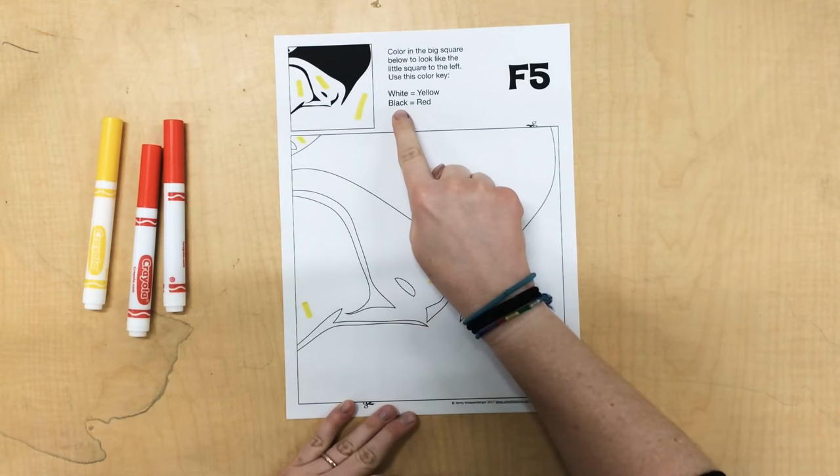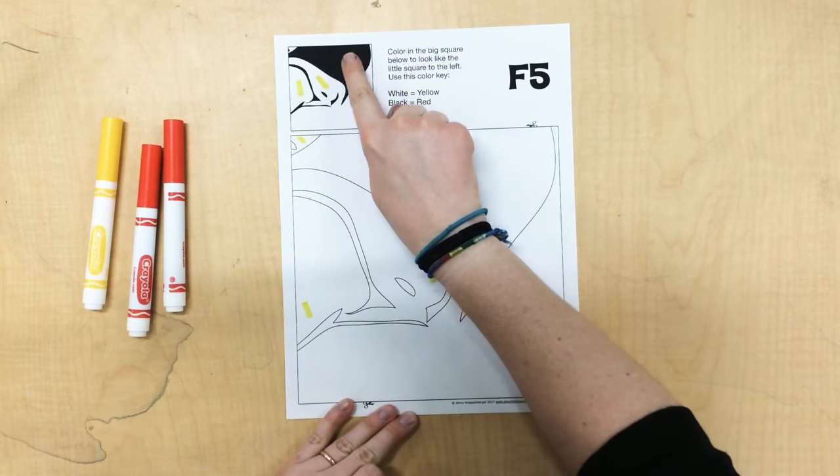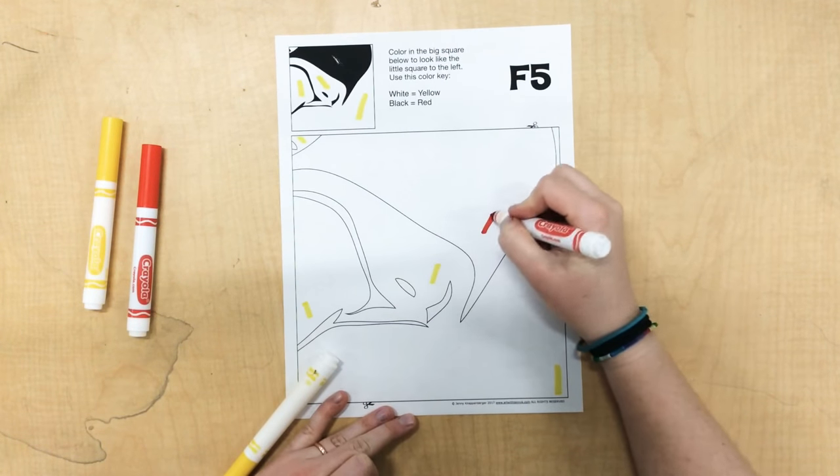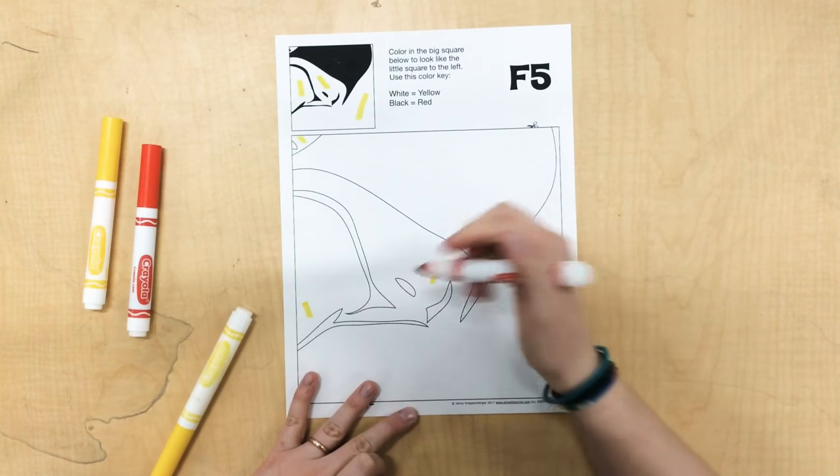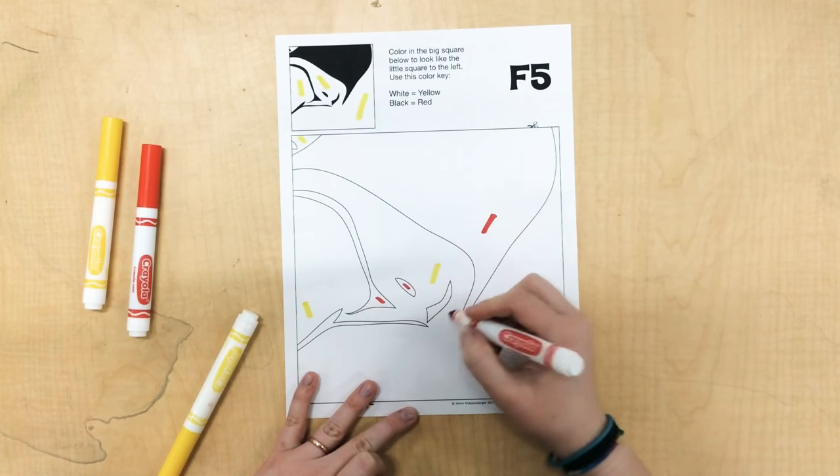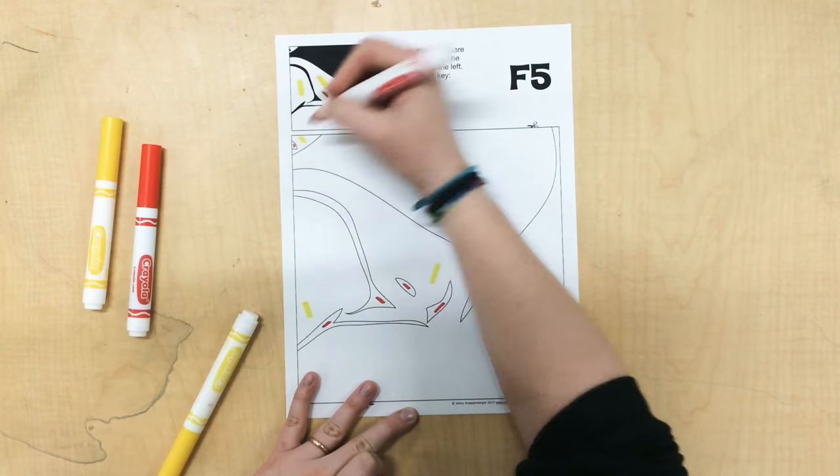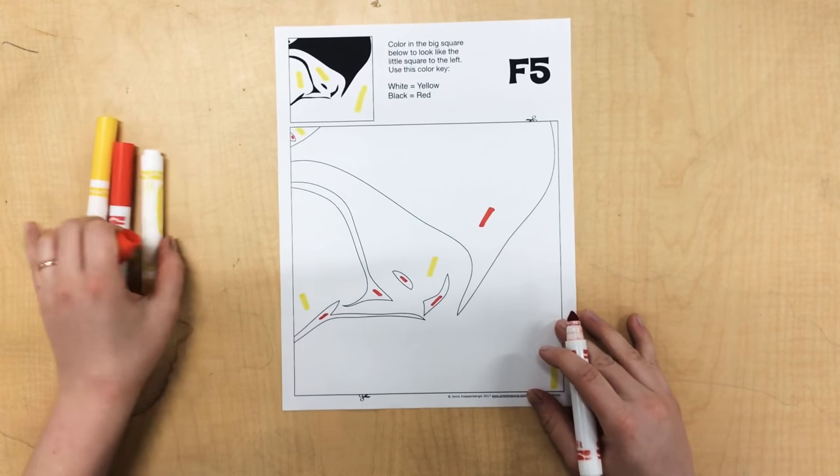Then it says the black spaces equal red. So this spot, and this, this one, this one, this one, and this one are all going to be colored in red.